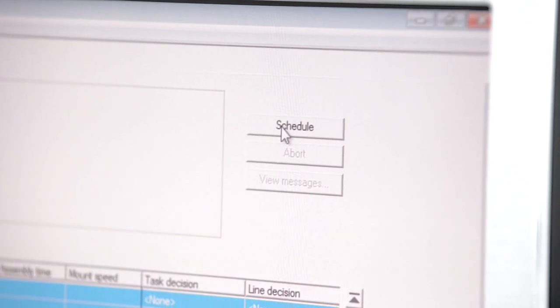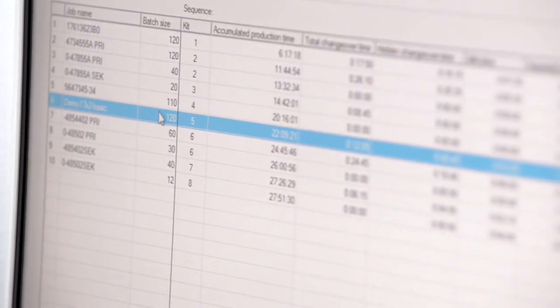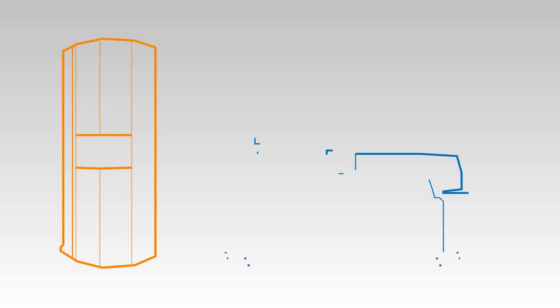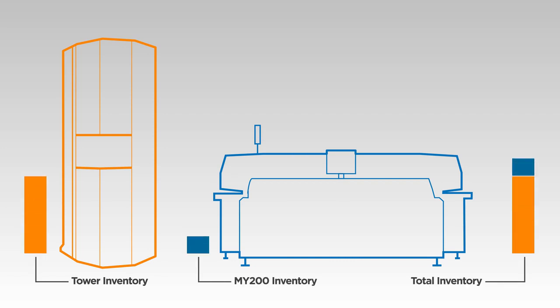It all starts with MyPlan presenting the production planner with the right tools for optimal job sequence, minimizing feeder loading and material movement by grouping similar jobs together. Material availability can easily be checked with impressive stock accuracy before production starts.